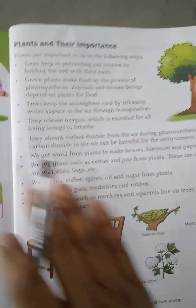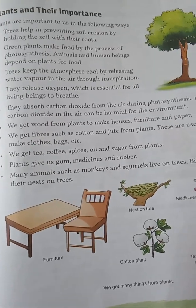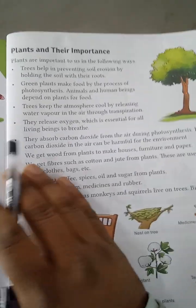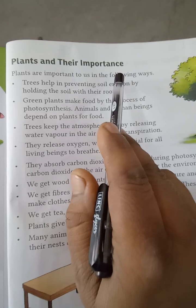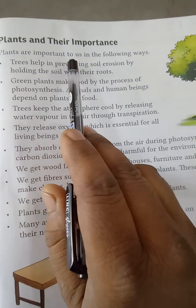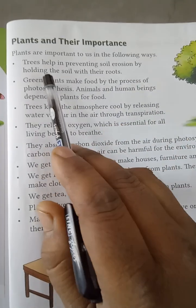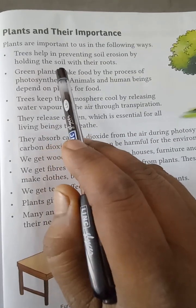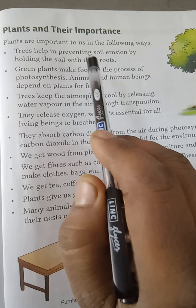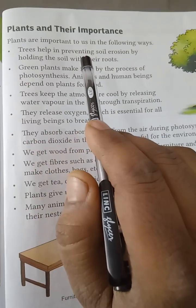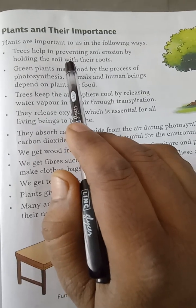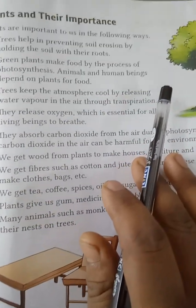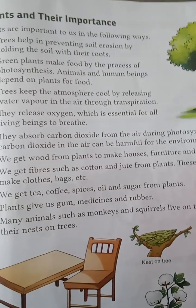All the things that surround us is known as environment — living and non-living things together make an environment. Now, plants and their importance: we all know that our life depends on plants because all the things we get from plants. Trees help in preventing soil erosion by holding the soil with their roots. The roots of the trees hold the soil firmly and prevent soil erosion.